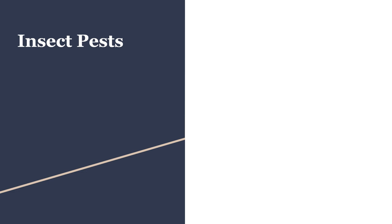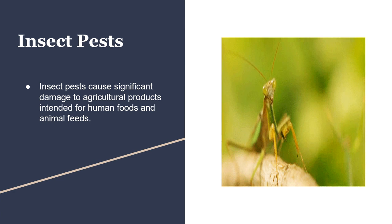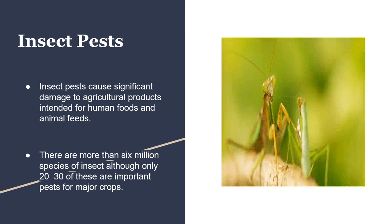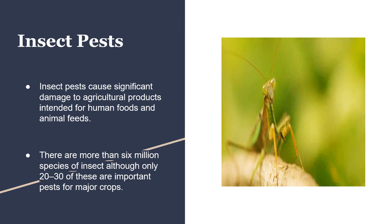Insect Pests. Insect pests cause significant damage to agricultural products intended for human foods and animal feeds. There are more than six million species of insects, although only 20 to 30 of these are important pests for major crops.